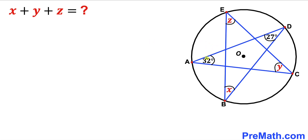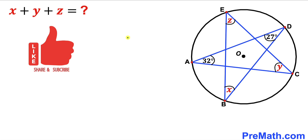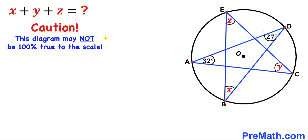Welcome to Pre-Math. In this video we have a star ABCDE inscribed in a circle, as you can see in this diagram. Angle A is 32 degrees, angle B is x, angle C is y, angle D is 27 degrees, and angle E is z. We are going to calculate the sum of these three angles: x plus y plus z. Note that this figure may not be 100% true to scale.